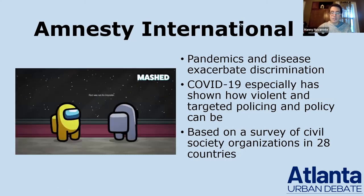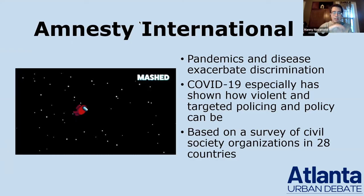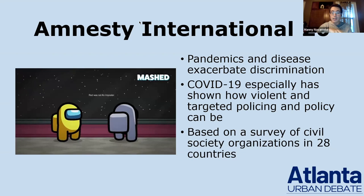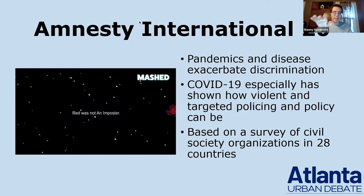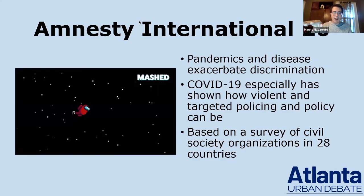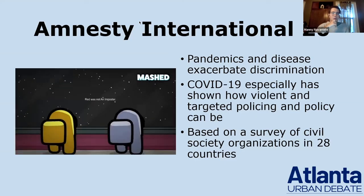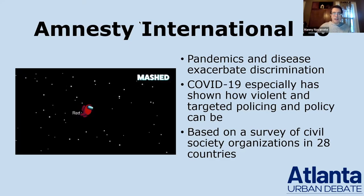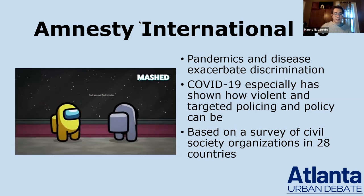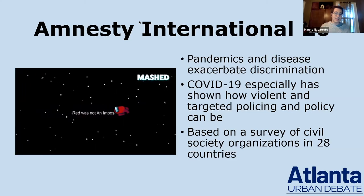The fourth and last piece is Amnesty International in 2020, your case-turns-the-critique evidence. This says pandemics and disease outbreaks exacerbate discrimination, with examples from COVID showing how violent and how targeted policing and policy can be in response to pandemics. This is an affirmative argument because without the affirmative's increase in pandemic preparedness, future disease outbreaks will happen, and because those outbreaks will become pandemics, there is more — not less — likelihood of the case impacts happening in a world without the plan.